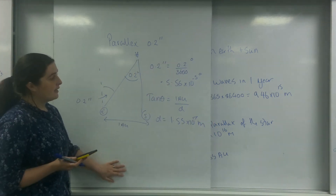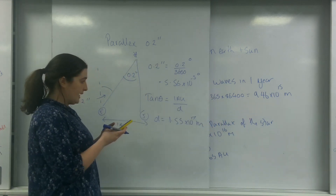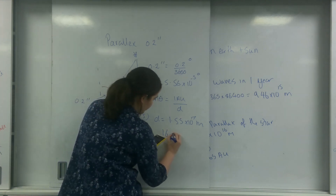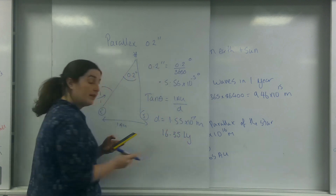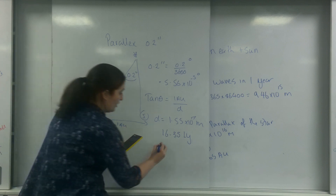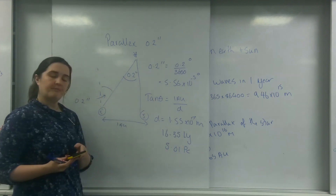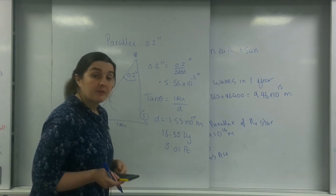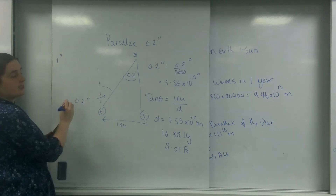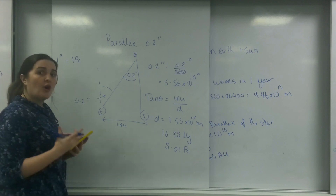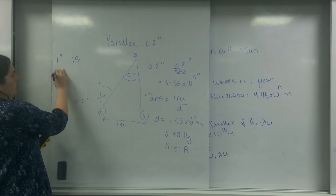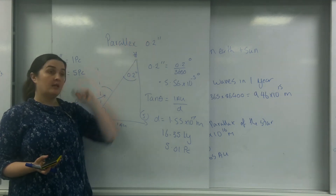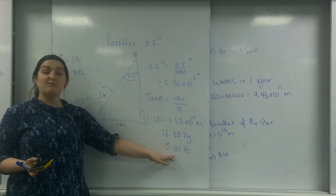Dividing by the light year value - 9.46 times 10 to the 15 - gives 16.35 light years. Dividing that by 3.26 gives 5.01 parsecs. There's also a shortcut: I know that if the angle is 1 arc second the distance is 1 parsec. At 0.2 arc seconds the angle is 5 times smaller, so the star must be 5 times further away - that's 5 parsecs. Which is approximately right, and you can use that approach in any calculation.